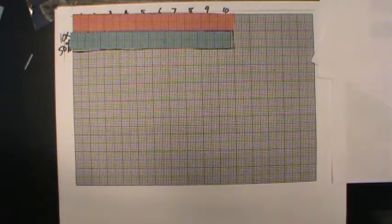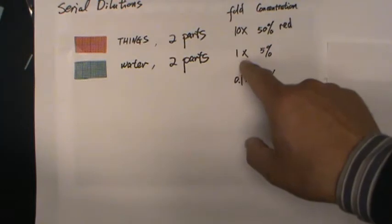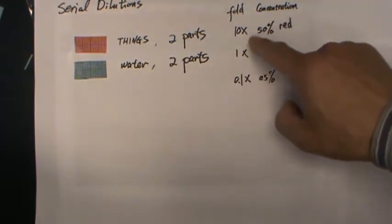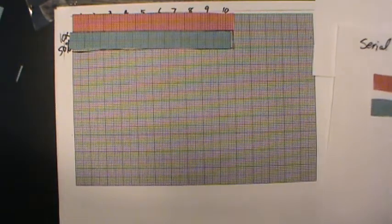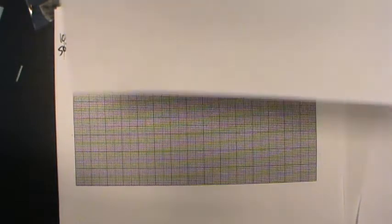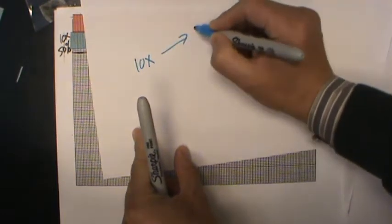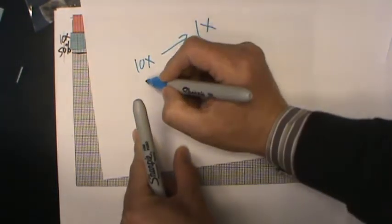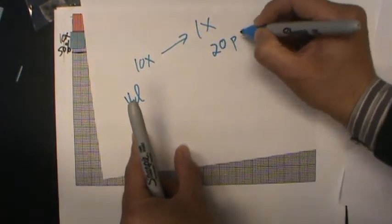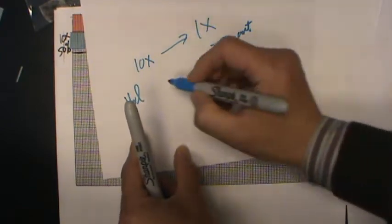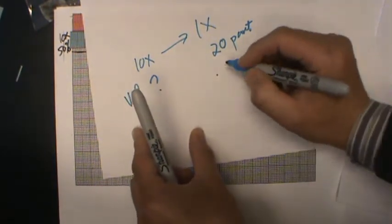So now we are going to make a 1x solution, a 10-fold dilution from 10x to 1x. Now, how do we do a 10x? So we start from a 10x solution. We want to change it to 1x. And the volume, again, is in this part. We want to do 20 parts. So the question is, how much do we need from the 10x?